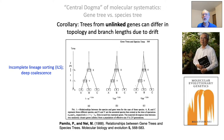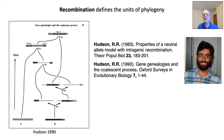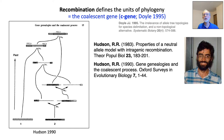This leads to lineage sorting. But incongruence can only occur if the genes are unlinked, if recombination has made them independent of one another. It is recombination, therefore, that defines the units of phylogeny, as has been recognized for many years. Following Hudson's work in the 80s and 90s showing the complexity of historical relationships of genes due to recombination, I termed these phylogenetic units coalescent genes, or C genes for short.